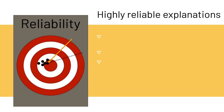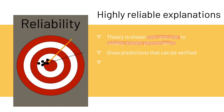Theories provide highly reliable explanations. A theory is shown over and over again to reliably explain the phenomenon that it's explaining. A theory also gives us predictions that can be verified.